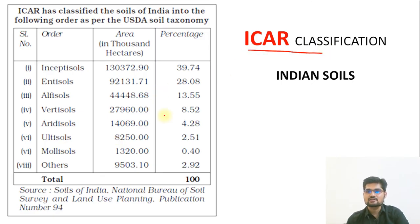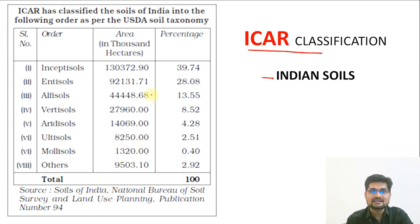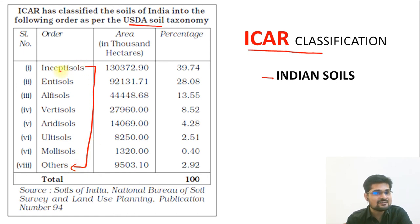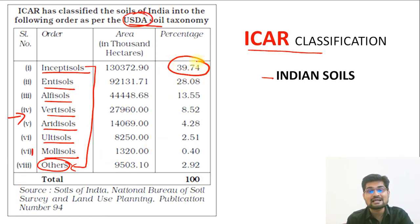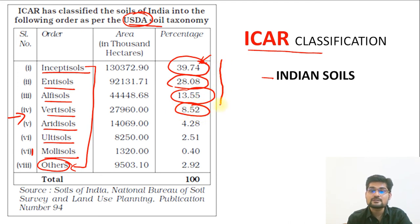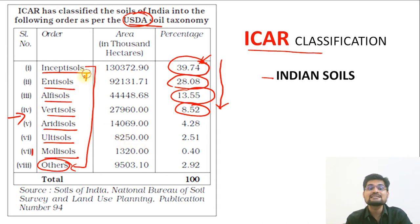Coming to the ICAR classification of Indian soils. ICAR adopted the USDA classification method for India and classified Indian soils into eight types. The seven clear categories are Inceptisols, Entisols, Alfisols, Vertisols, Aridisols, Ultisols, and Mollisols, with an eighth mixed category. Inceptisols are the highest found in India, followed by Entisols, then Alfisols, then Vertisols. Many multiple choice questions can be asked on this sequence of percentages.